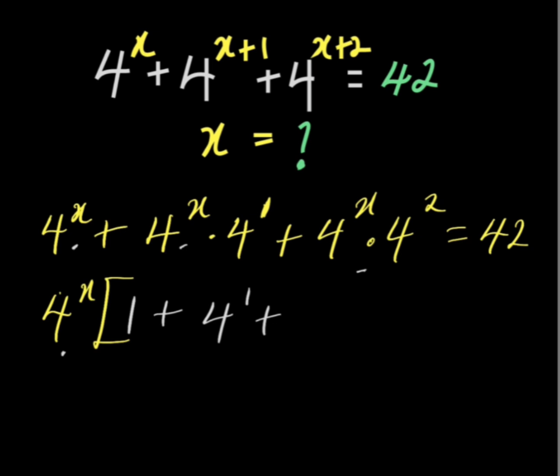Plus 4 power x dot 4 power 2 divided by 4 power x. It will give us 4 to the power of 2, then everything is equal to 42. So, we have that 4 to the power of x into 1 plus 4 power 1 is 4 and 4 power 2 is 16. Everything is equal to 42.